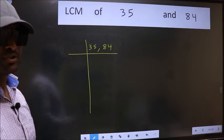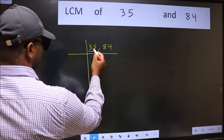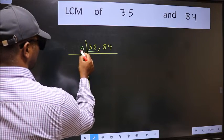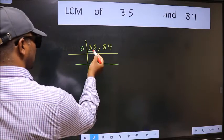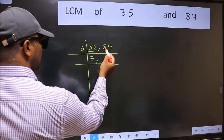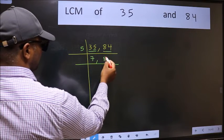Now focus on the first number which is 35. In this number the last digit is 5, so take 5. When do we get 35 in the 5 table? 5 times 7 is 35. The other number 84 is not divisible by 5, so you write it down as it is.